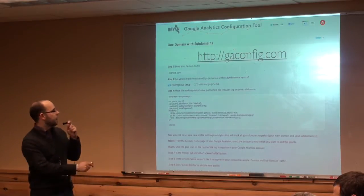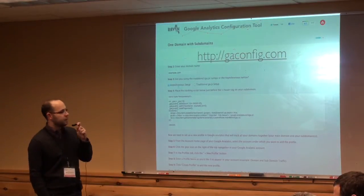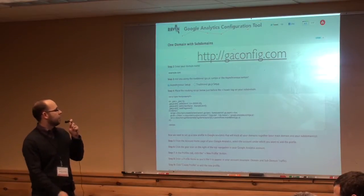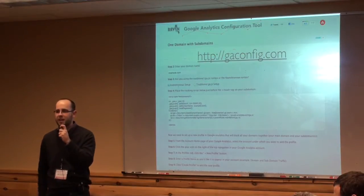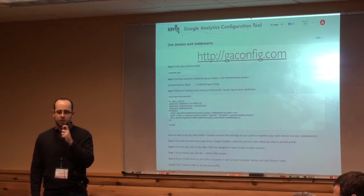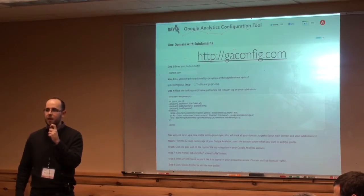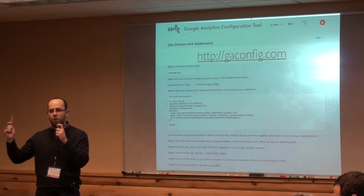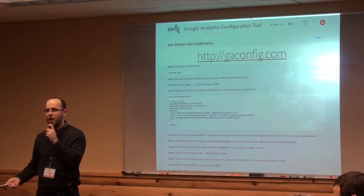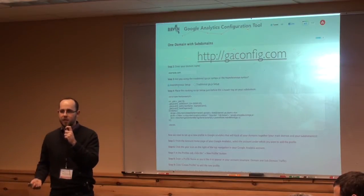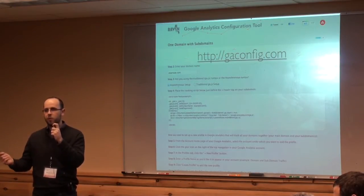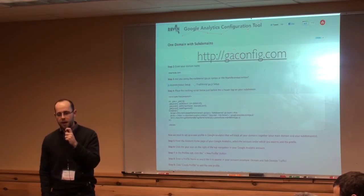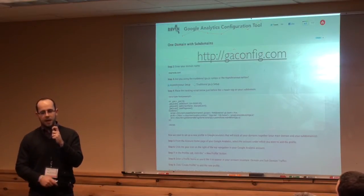So you go here — all you need to know is your Google Analytics account number, the site you're working on, and whether you're using the traditional GA.js or the async setup. Most people would be using the async setup. With just three clicks of a button, we tell you the code that you need and where you need to put it. You don't have to worry about privacy because it doesn't save any information. It's just a straight-up free tool to make that process easier. Hopefully you guys will try it.